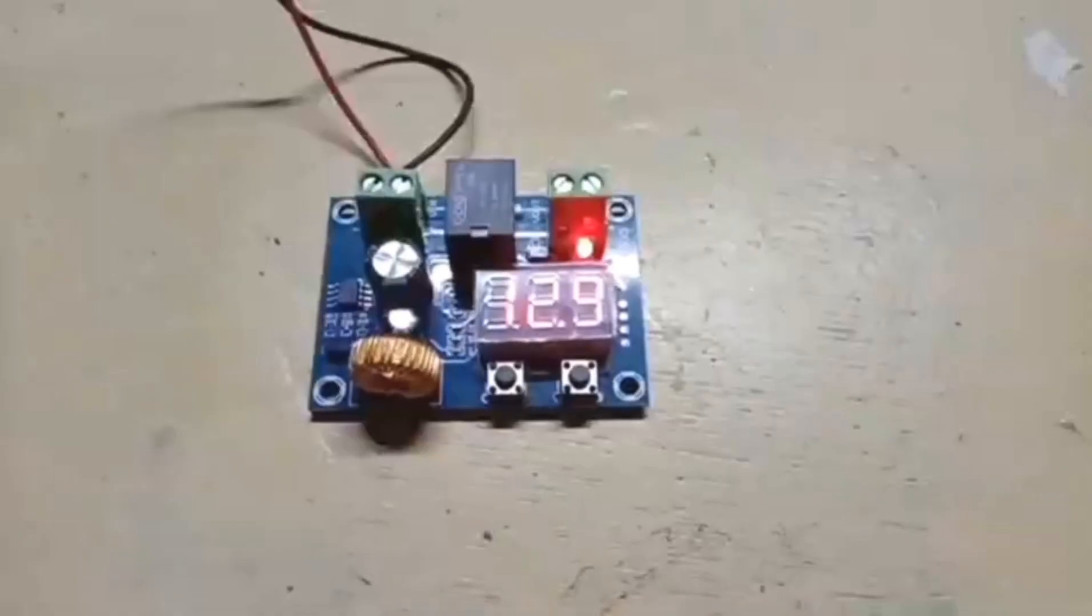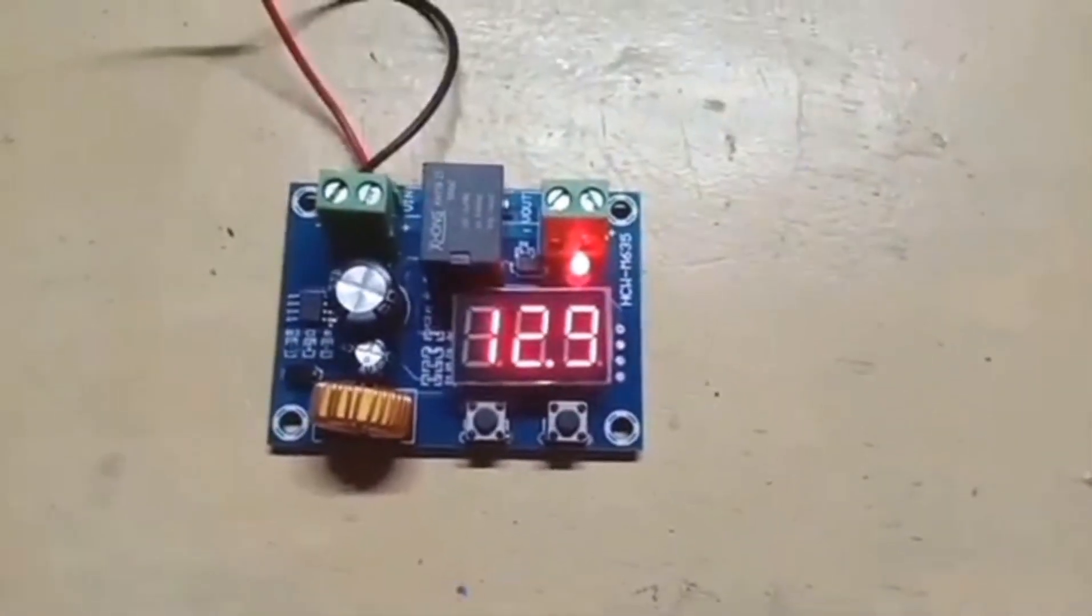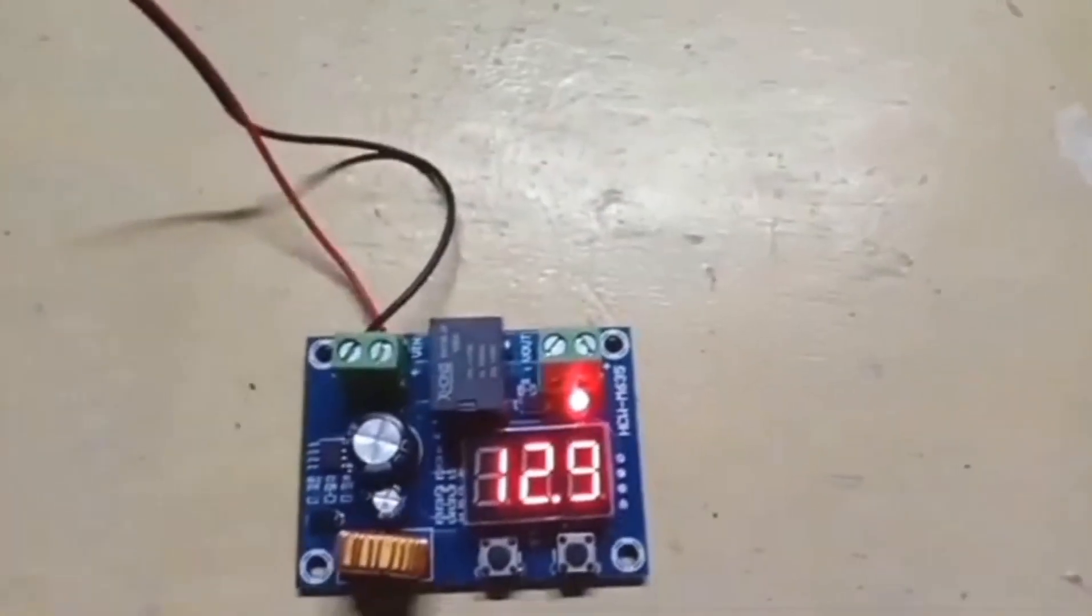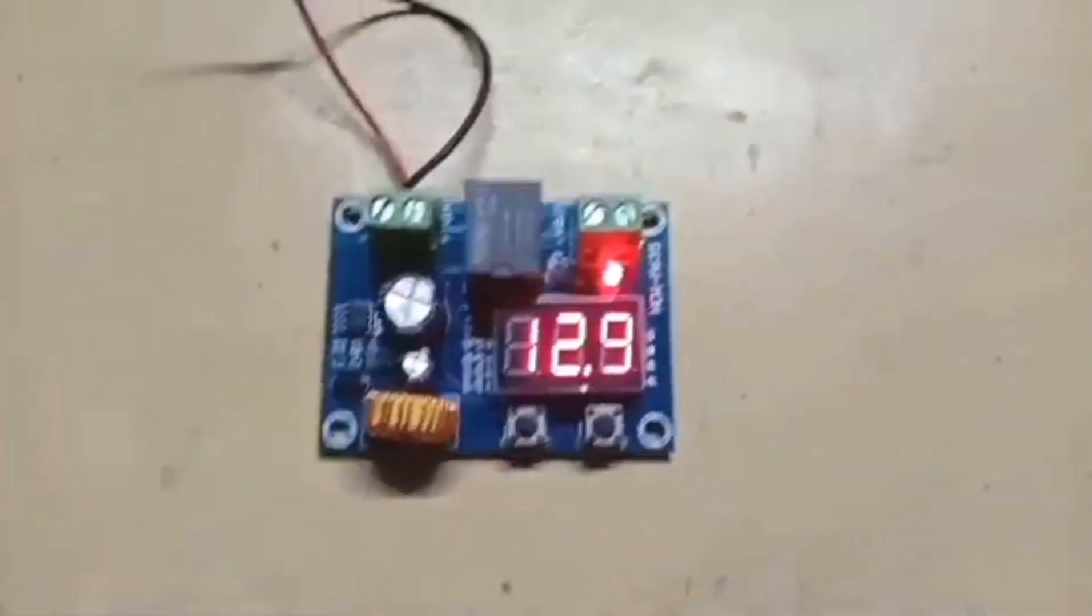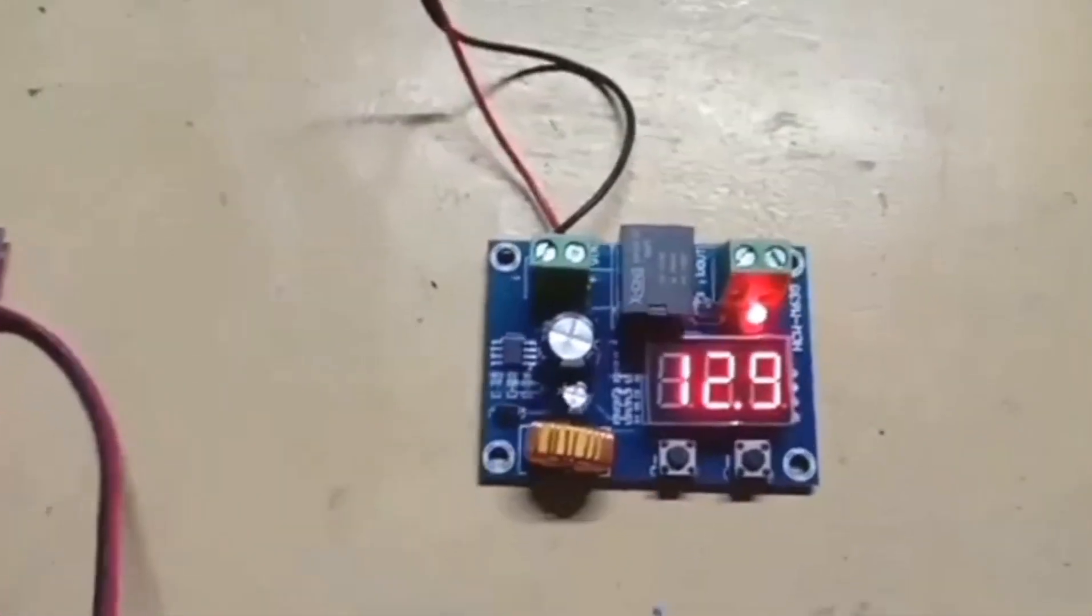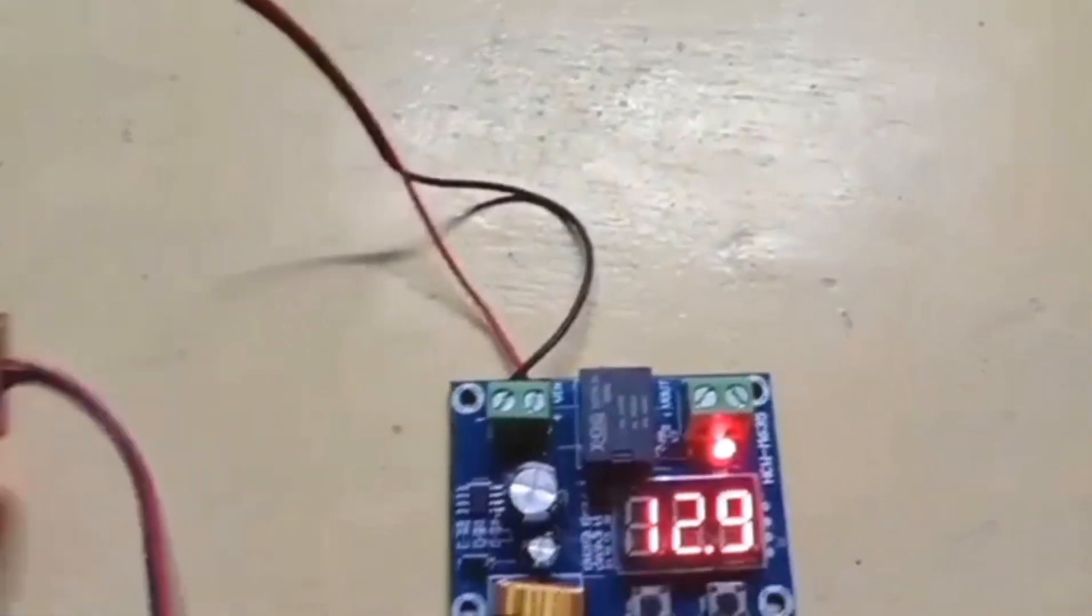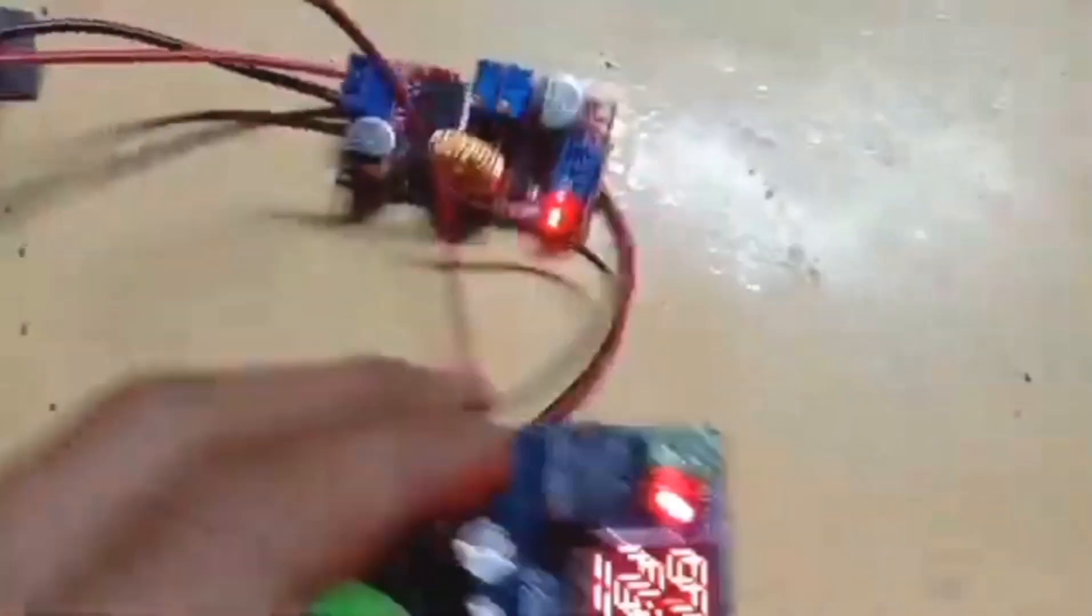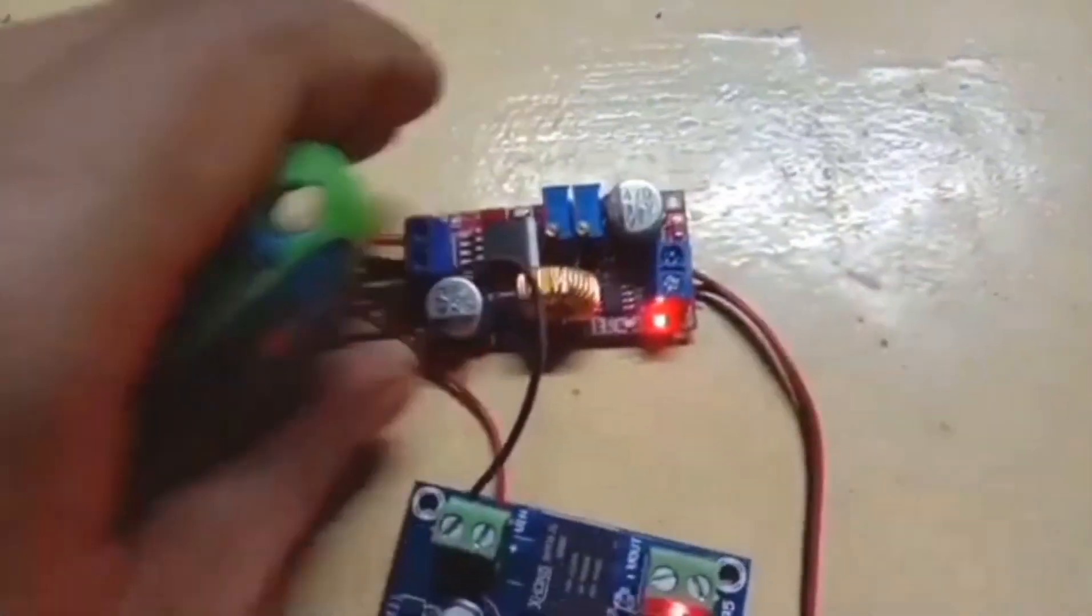This module is set with 12.7 volt low voltage cutoff and 12.9 for load, meaning that when voltage goes down to 12.7 volts it switches off the load to allow charging mode. And when voltage reaches 12.9, the load will be restored only to repeat this when it drops to 12.7.